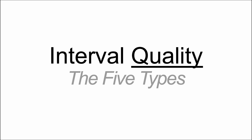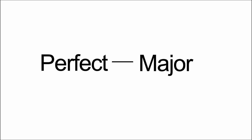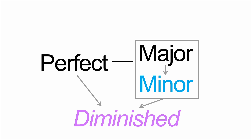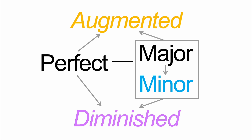Let's start by breaking down the five types of interval quality. The main two types are perfect and major, and from there we can modify things. If we lower a major interval, we get a minor interval. If we lower a perfect or a minor interval, we end up with a diminished interval — so lowering perfect once gets you diminished, but you have to lower a major interval twice to get there. Or if you raise a perfect or major interval, you end up with an augmented interval. We're going to focus on just perfect, major, and minor for this video.